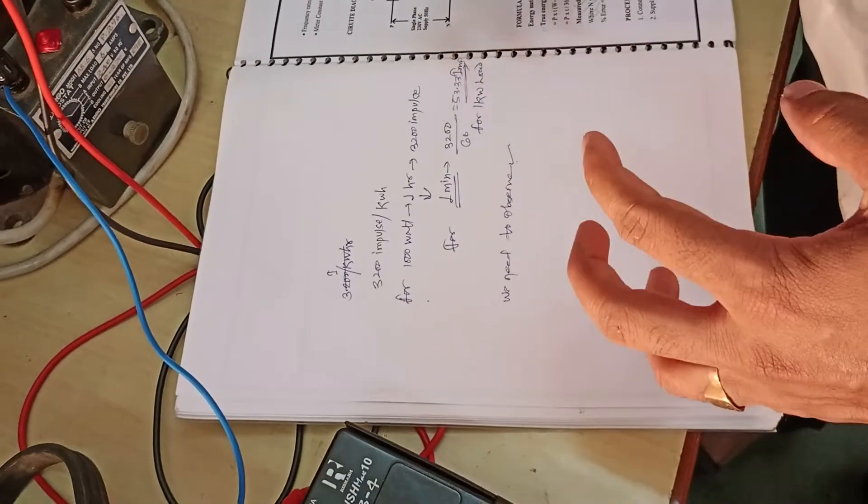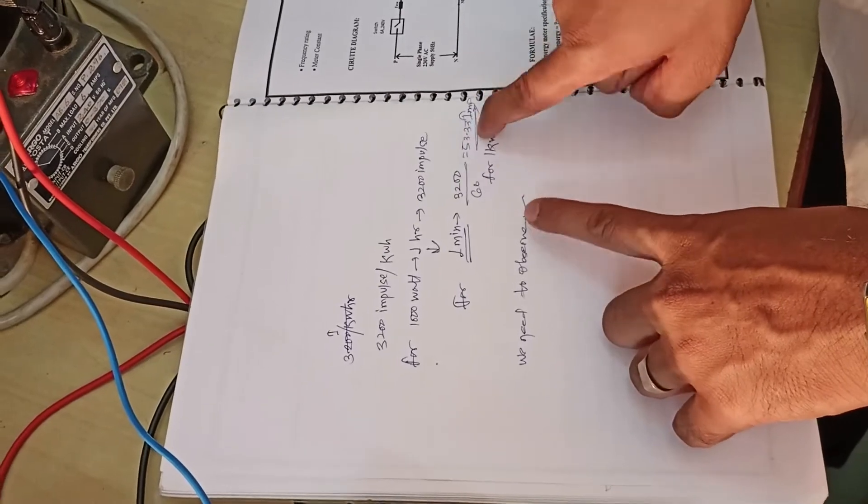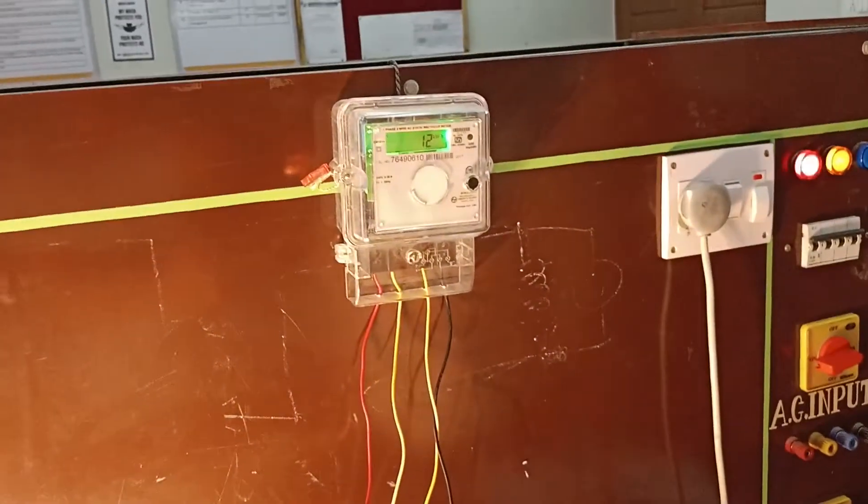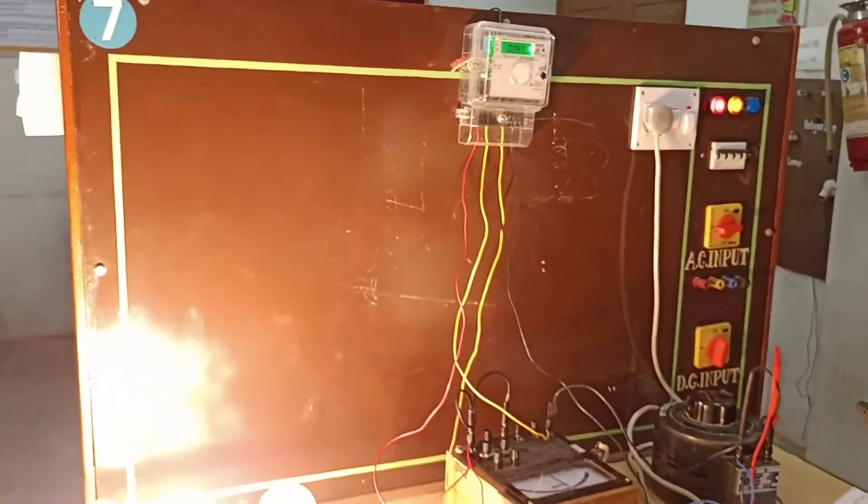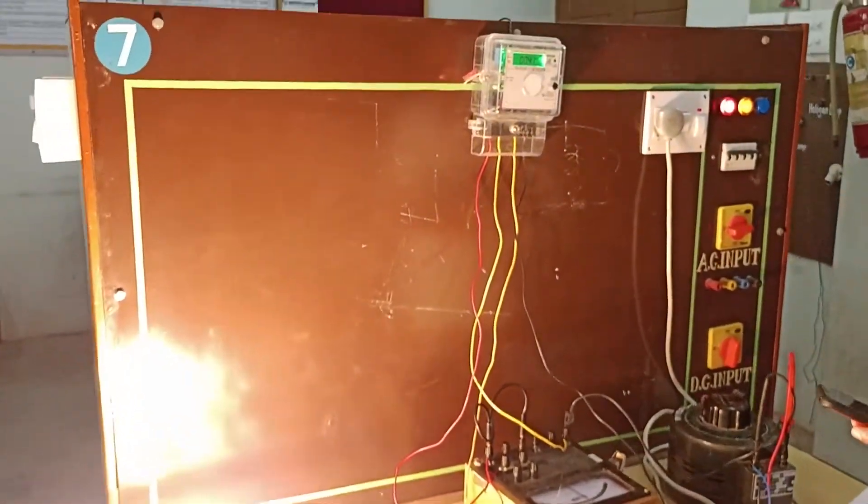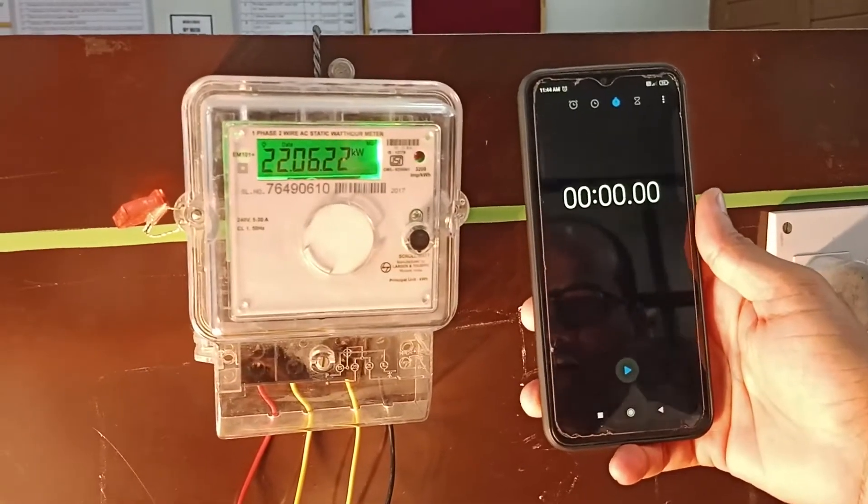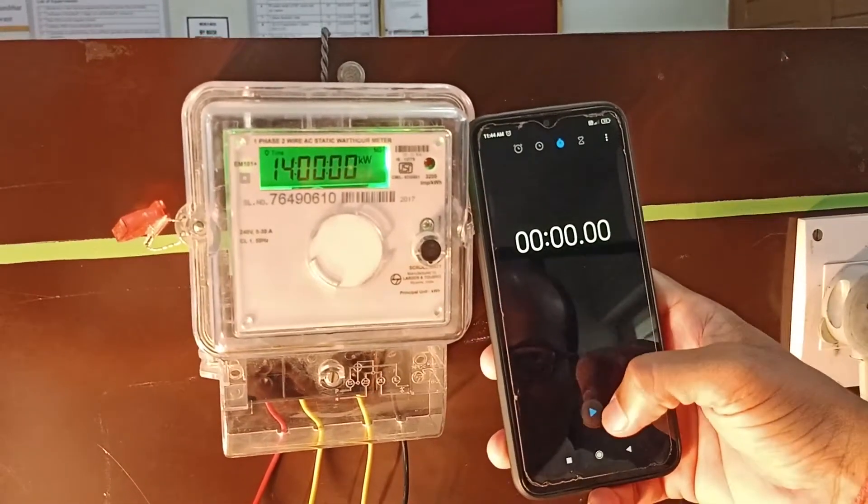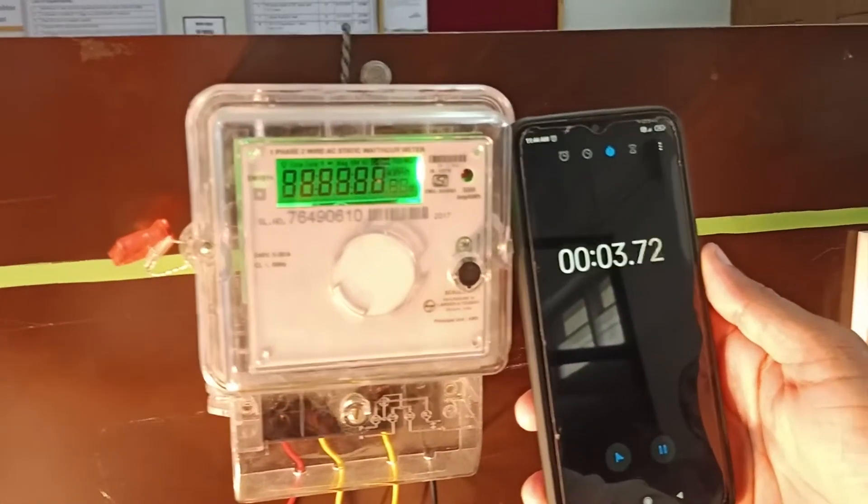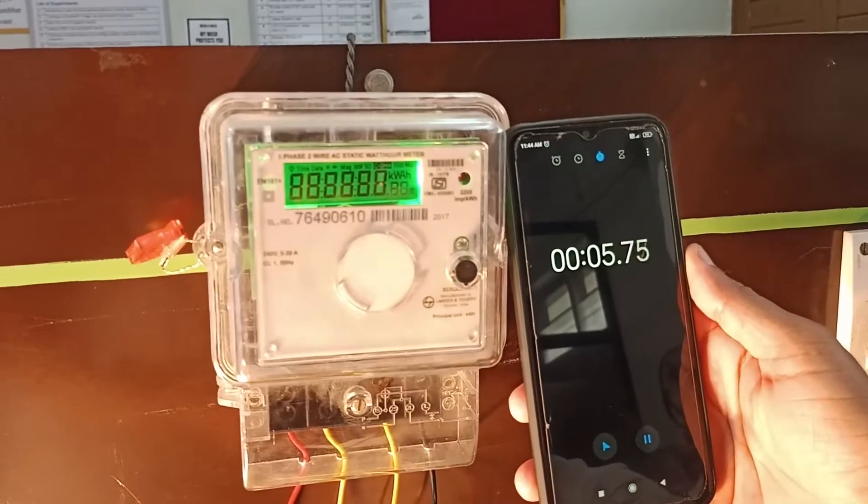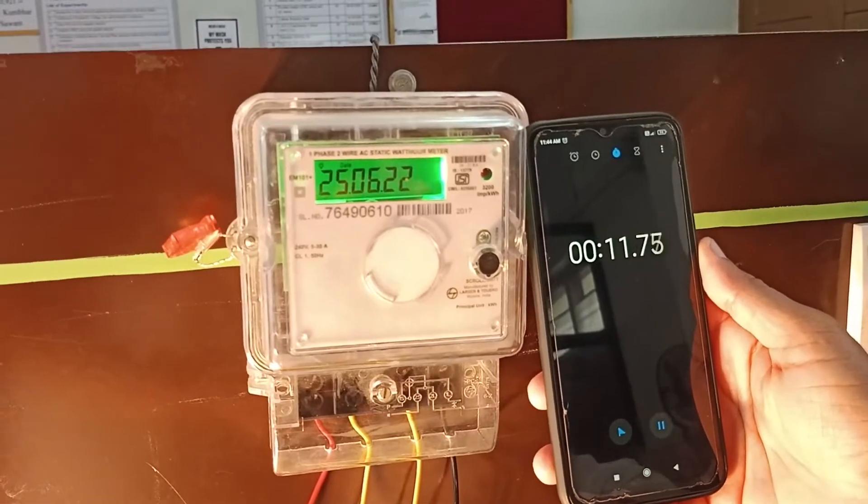This is the theoretical value. For calibration we are verifying if this theoretical value of 53 is matching to our practical load or not. For that I will simply start my stopwatch. I have started my timing and we're going to calculate how many impulses occur.